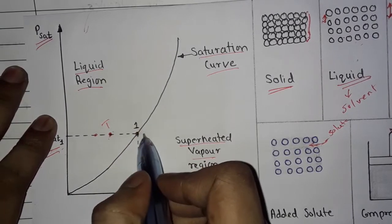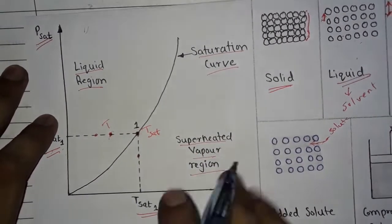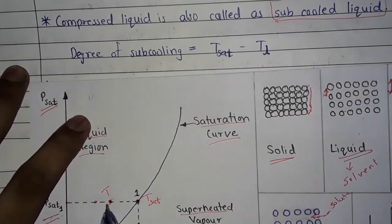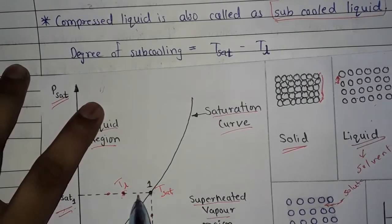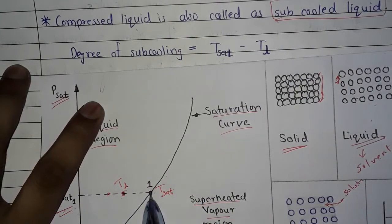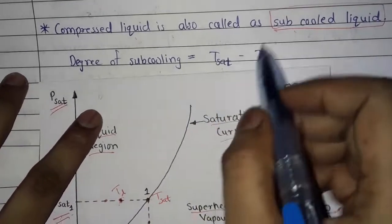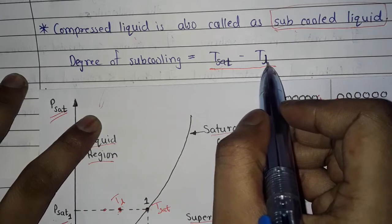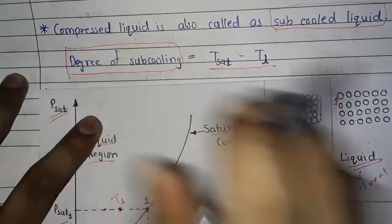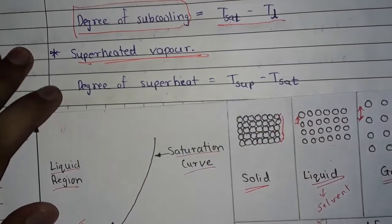Compressed liquid is also called sub-cooled liquid, because in the case of compressed liquid the temperature T-L is less than the saturation temperature T-sat. The difference T-sat minus T-L — that is, saturation temperature minus compressed liquid temperature — is called the degree of sub-cooling.